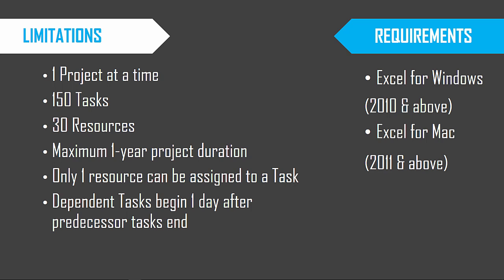In order to accomplish all that we have seen so far using a very simple Excel workbook with no macros, we had to create some boundaries. The template can handle only one project at a time, though we can make a copy of the file and manage a second project separately. A project can have up to 150 tasks and 30 resources. The maximum duration of a project is one year. The scheduling engine can handle only one resource assignment per task, though the template can handle two predecessors per task, scheduling dependent tasks to begin only the day after the predecessor tasks end.